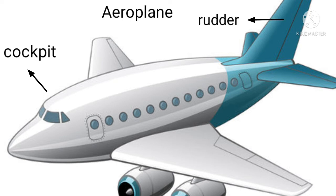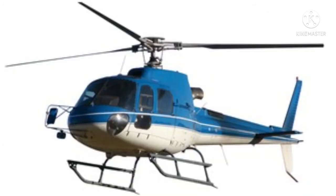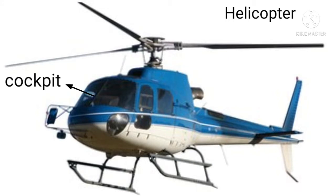This part is called the rudder — the rudder assists the plane in moving left and right. Next aircraft is the helicopter. This is a helicopter — a helicopter is also an air transport. It moves through the air, can spin around in the air, and can fly lower than an aeroplane. The helicopter also has a cockpit, where the pilot sits and drives.